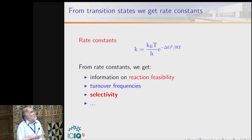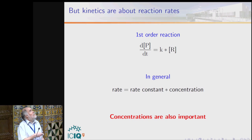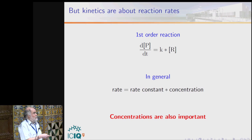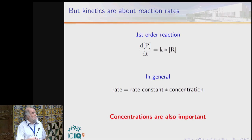How does this connect to free energy profiles? The energies of the intermediates give us equilibrium constants, telling us thermodynamical preferences and relative stabilities. But the equilibrium constant is related to concentrations. In the case of reaction rates, we can connect them to the relative energy of the transition state through the Eyring equation, from which we get information on reaction feasibility, turnover, and selectivity. But what really matters is the reaction rate, which depends on the rate constant and the concentration.